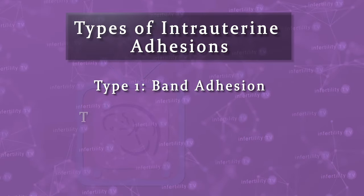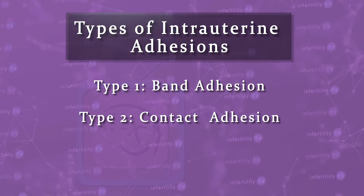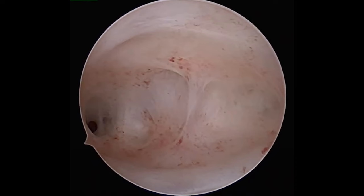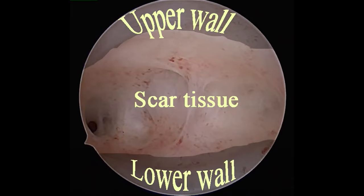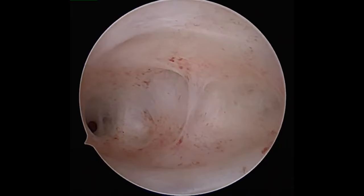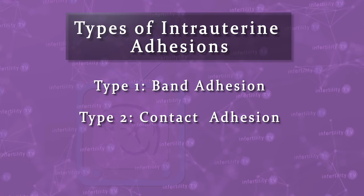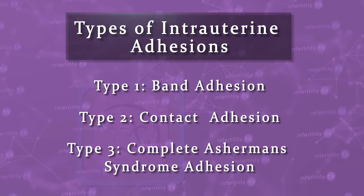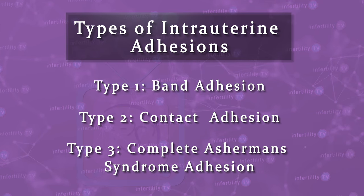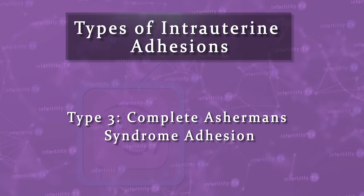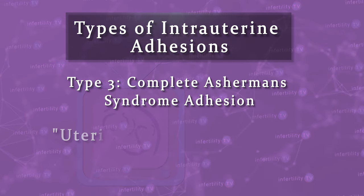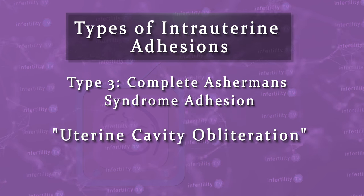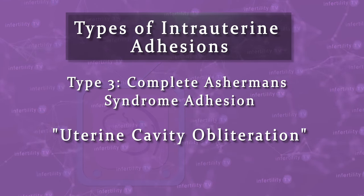Category two is called a contact adhesion. In this type, the walls of the uterus have gotten stuck together. The affected area is usually larger than is seen with a band adhesion. Category three is when the entire uterine cavity has been affected. This type of adhesion is a more severe version of category two. Doctors will refer to this as uterine cavity obliteration.